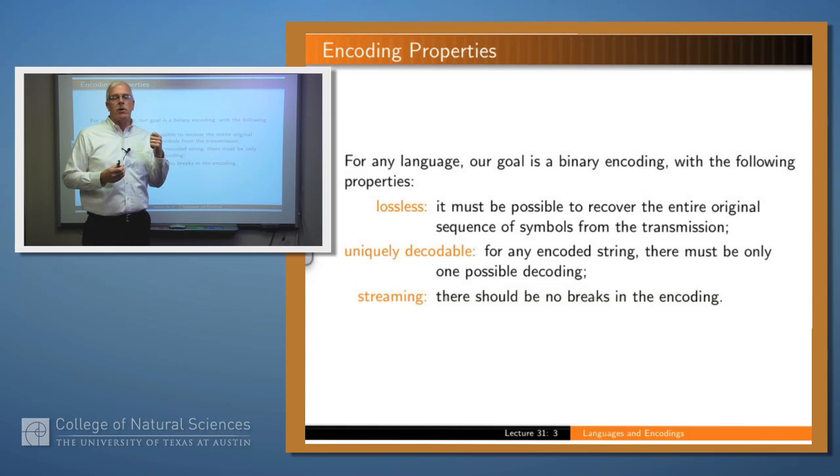The second thing, we want our encoding to be uniquely decodable. What that means is that the receiver gets a string of bits, zeros and ones. He's able to recover unambiguously what the sender was intending to send. That is, for any string of these bits, there's not two different ways in which you can read them. And then finally, we want it to be streaming. That is, we want to send the bits one right after another. We don't want to have any breaks.